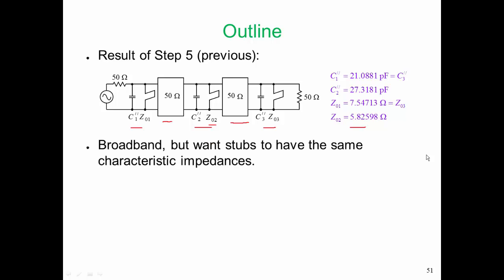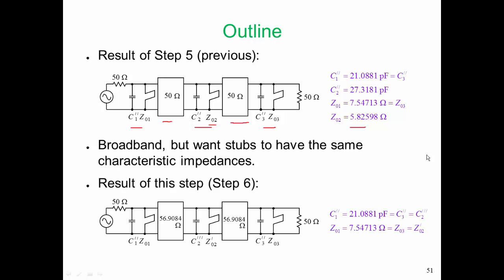But we want the stubs to have the same characteristic impedance. And the result of this step, after we do the transformations that we're going to talk about now, is we're going to end up with this design where Z01, Z03, and Z02 have the same characteristic impedance.